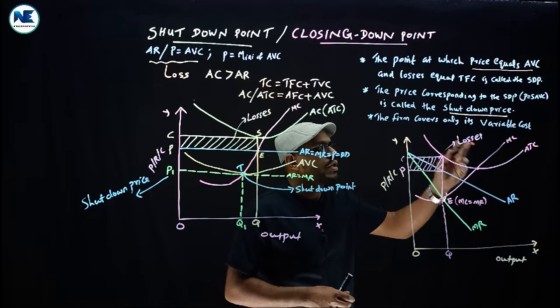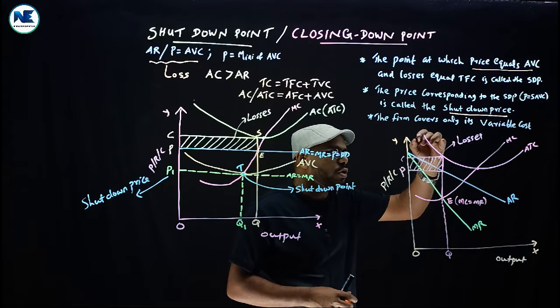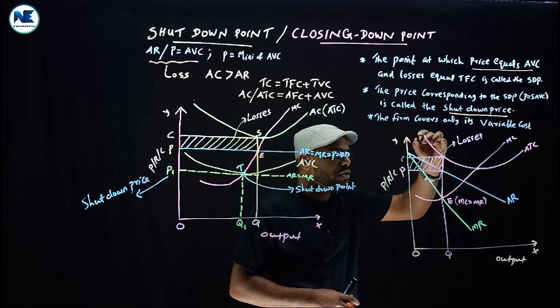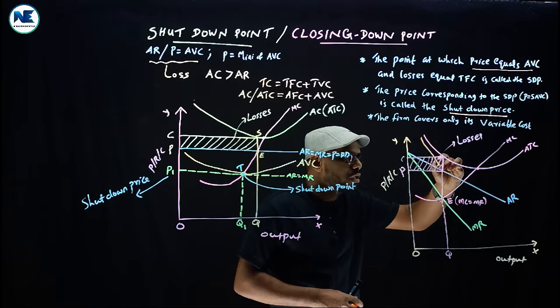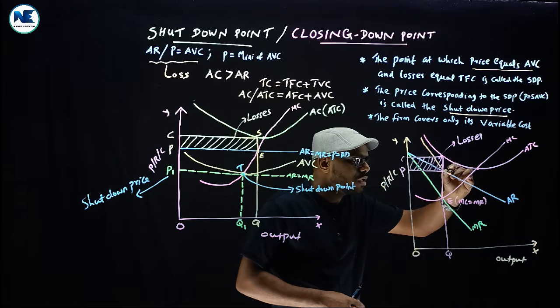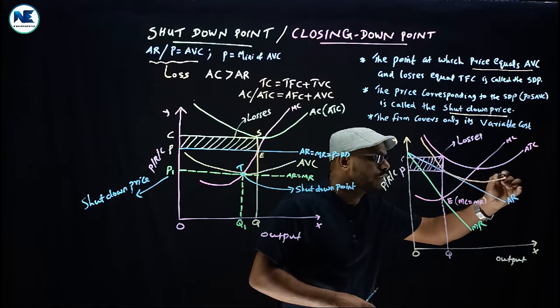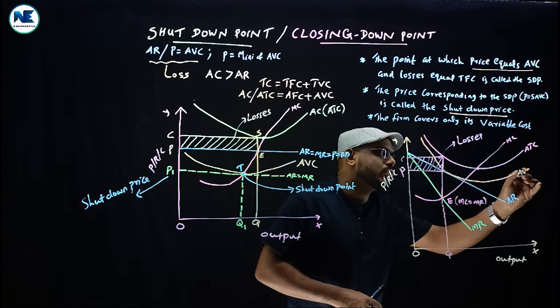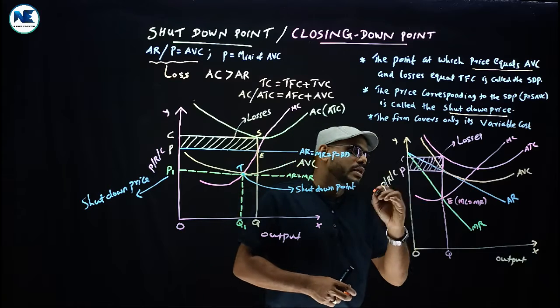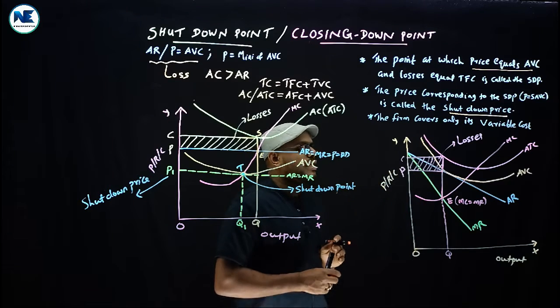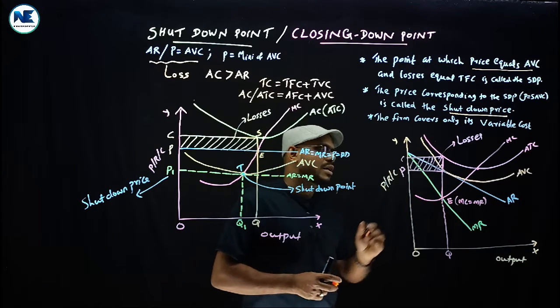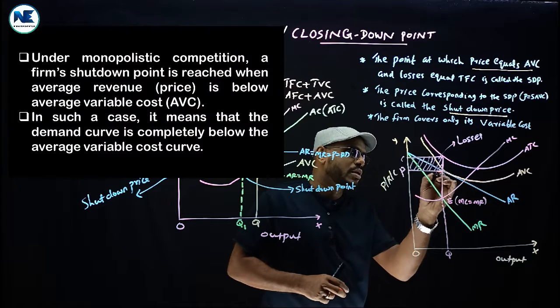There is average variable cost curve. The minimum point of average variable cost - this is the shutdown point, located here.